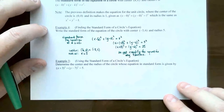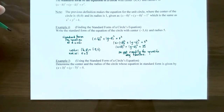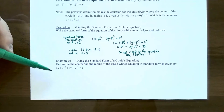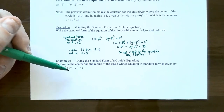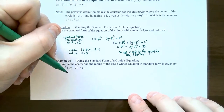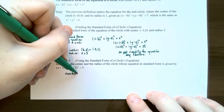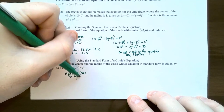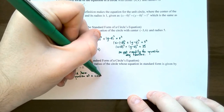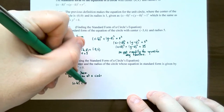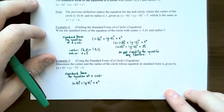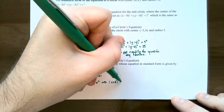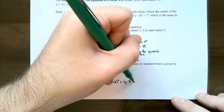Example 5: We're going in reverse. Given the equation in standard form, determine the center and radius. The equation is (x + 3)² + (y − 7)² = 5. We want to use standard form (x − h)² + (y − k)² = r² to figure out the center and radius. Note: the right side is just 5, not 5 squared.